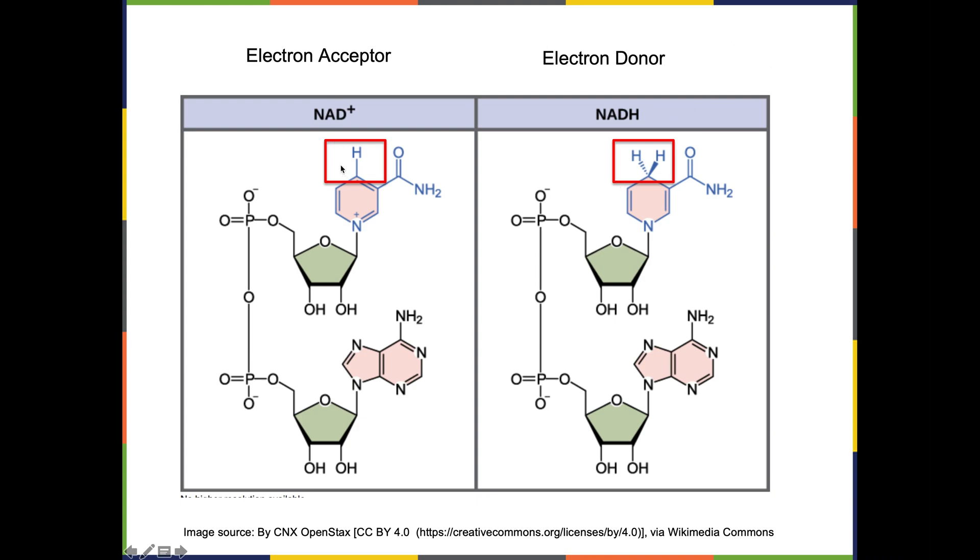Remember I said the hydrogens are the ones carrying the electrons. You can see NAD+, the electron acceptor, has only one hydrogen here. But when you compare the structure to NADH, there are two hydrogens now. This molecule, going from NAD+ to NADH, is being reduced. It's gaining an electron.